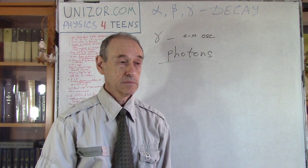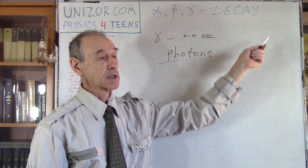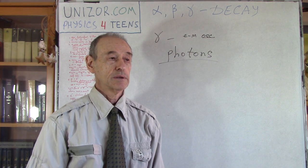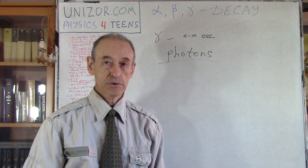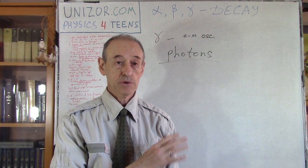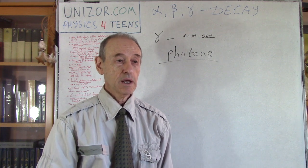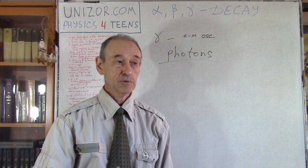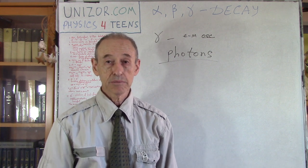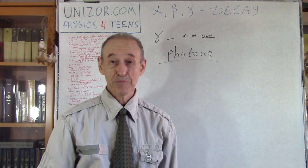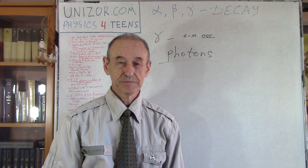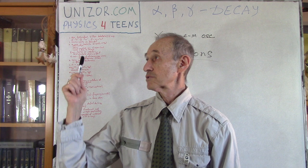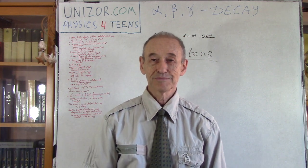Anyway, my lecture today was about alpha, beta, and gamma rays, decays, and particles. I have decided to dedicate the whole lecture to this because it's very important for what I will be talking about next — something like splitting the atom, releasing energy, the atomic bomb. That will be the next lecture. Thanks very much. I suggest you read the notes for this lecture on unizor.com. Good luck!